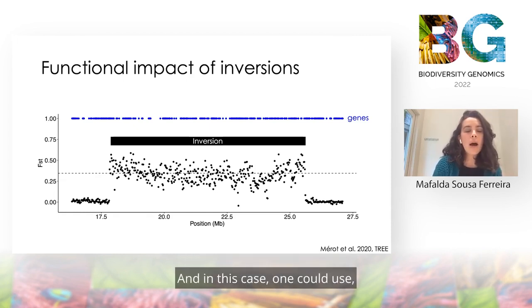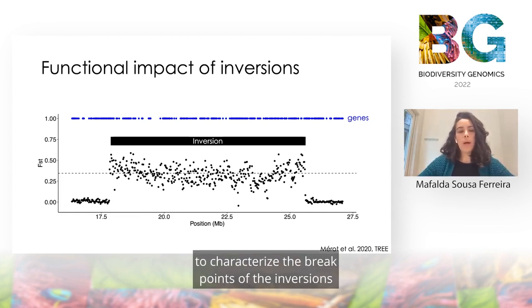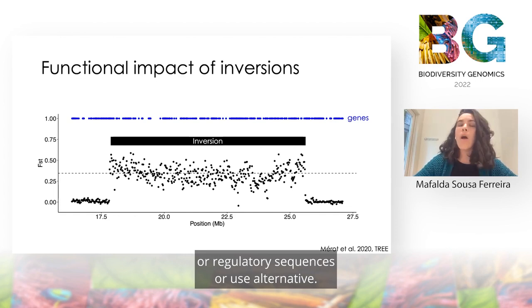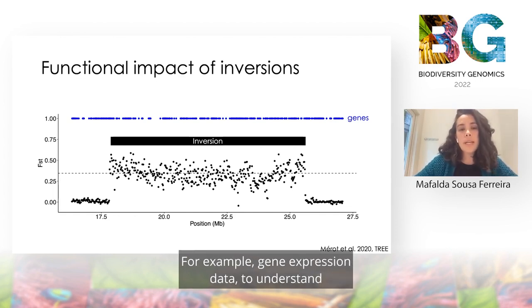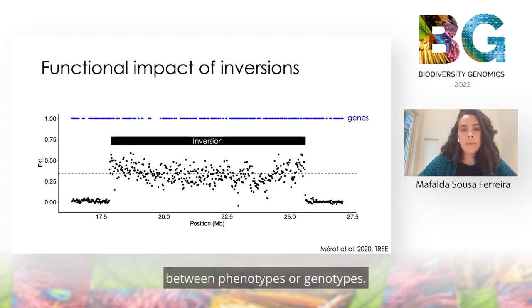In this case, one could use, for example, long-read sequencing to characterize the breakpoints of the inversions and understand if they are disrupting coding sequences or regulatory sequences, or use, for example, gene expression data to understand if there are any genes that show different expression levels between phenotypes or genotypes.